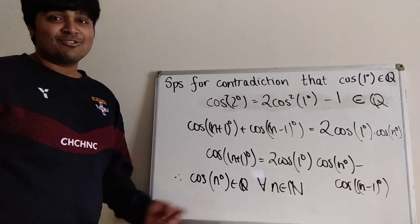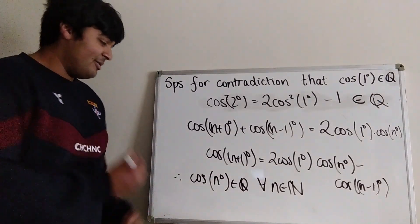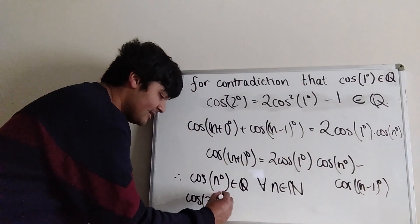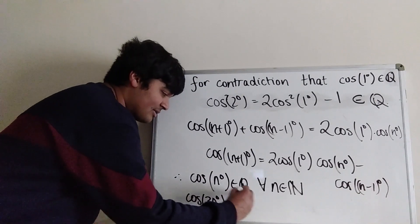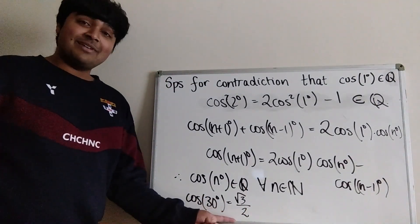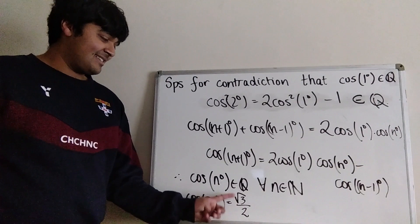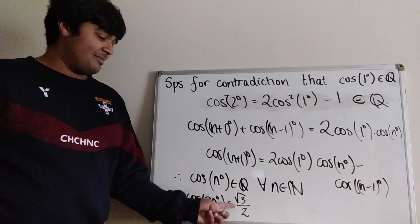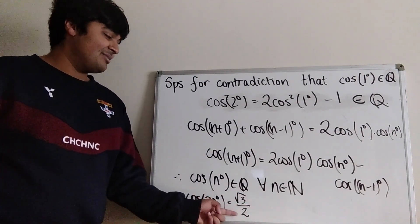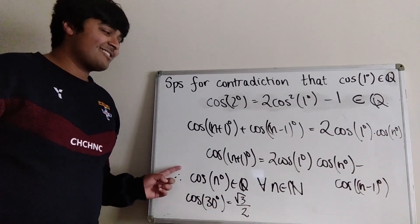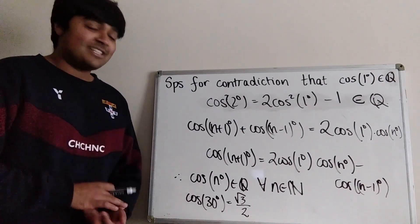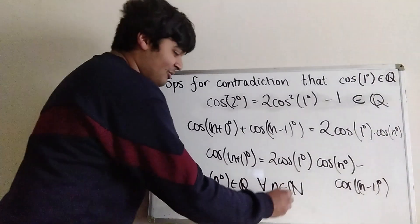But this cannot be true because we know that cosine of 30 degrees equals root three over two. This number is certainly not rational because it's an irrational number divided by two — so it's going to be an irrational number. But our result tells us it should be rational. Hence we've reached a contradiction.